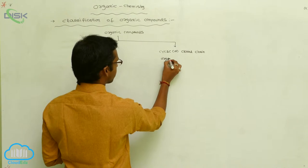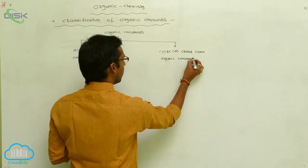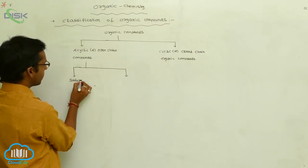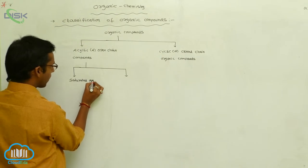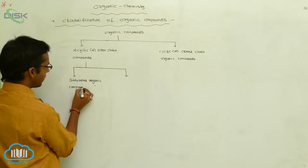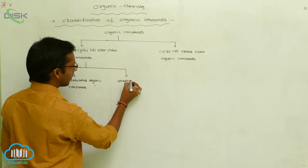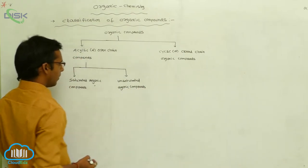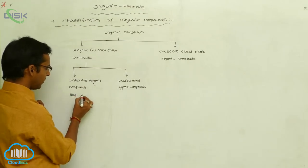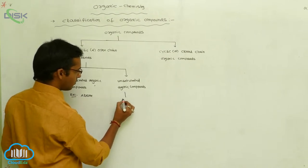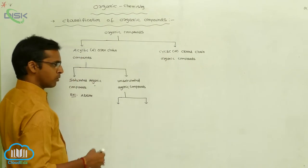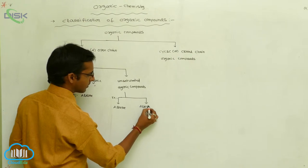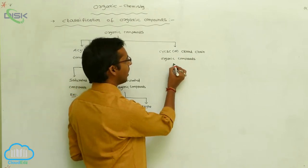Acyclic and open chain compounds are classified into two types: one is saturated organic compounds and the next one is unsaturated organic compounds. Saturated organic compound examples are alkane. Unsaturated organic compounds are classified into two types based on double bond and triple bond, with examples alkene and alkyne.